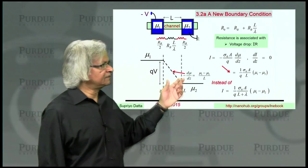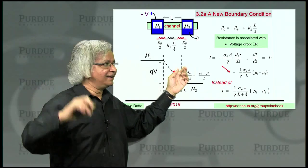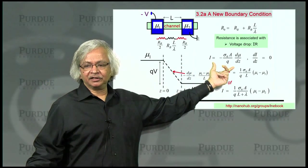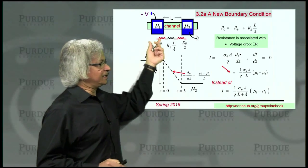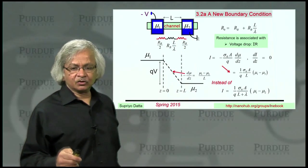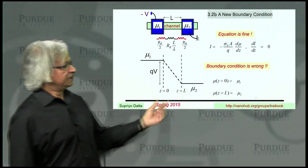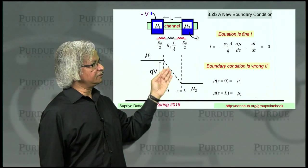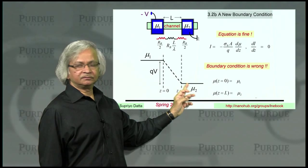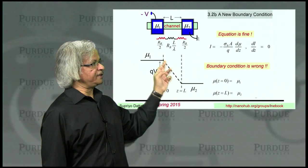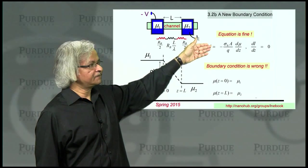Now, the point is what I'd like to argue is that's not the case, really. The equation is fine. The boundary condition is wrong. What we need to do is change the boundary condition. That is what happens at these interfaces. So what we'd like to argue is that the boundary condition we used is that the electrochemical potential at z equal to 0 must be mu 1 and at z equals L must be mu 2. And then we drew a straight line in between as required by the diffusion equation and the continuity equation.